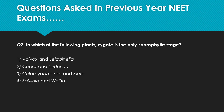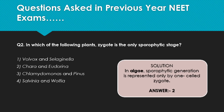Looking at the options: the second option is Pinus, which is a gymnosperm having a diplontic life cycle, so this is wrong. The fourth option is Salvinia and Wolffia — Salvinia is a pteridophyte having a haplodiplontic life cycle, and Wolffia is an angiosperm with a diplontic life cycle, so this is also wrong. The correct answer is the option referring to algae like Volvox, Spirogyra, Chlamydomonas, Scara, and Eudorina, which have a haplontic life cycle, meaning the zygote is the only sporophytic stage.